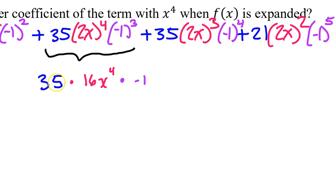I have brought down the 35. (2x)^4 is 16x^4. (-1)^3 is -1. When you raise a negative number to an odd power, the negative stays.